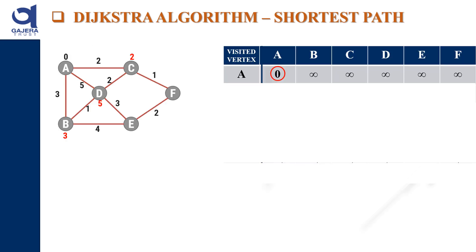Let us understand the full example. Here, the source vertex is A — it is given in examination; if not given, we select any one node. The distance from A to A is 0, and we do not know the distances from A to other nodes, so they are initialized to infinity. The visited vertex list ensures we do not visit a vertex more than once. Our source node is A, so the distance from A to A is 0.